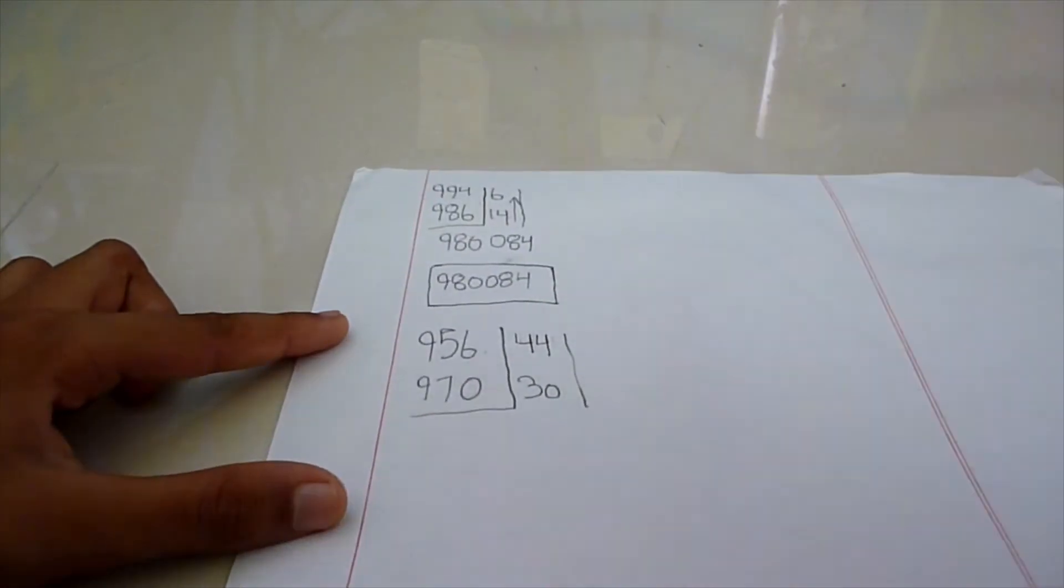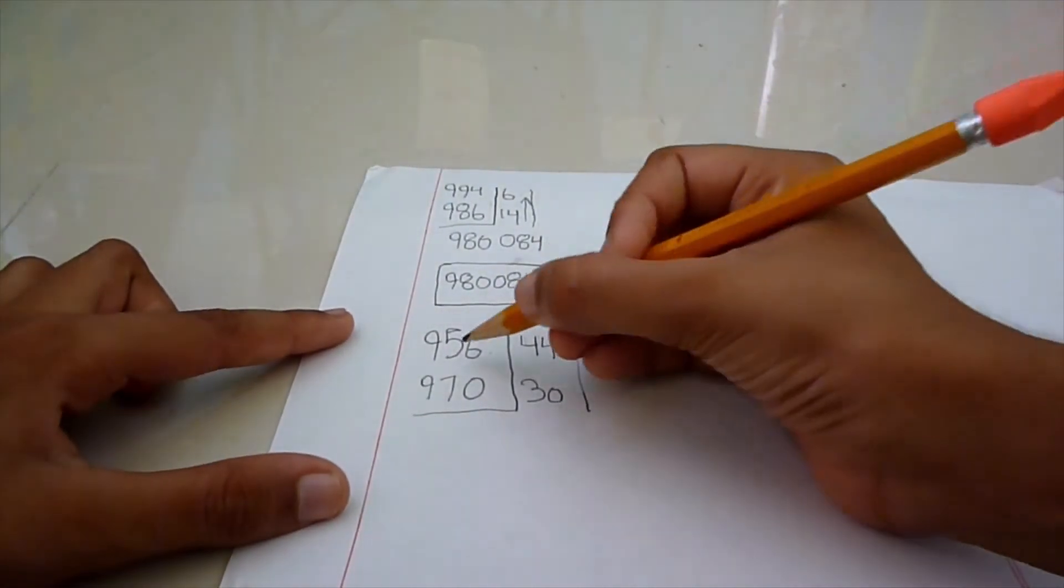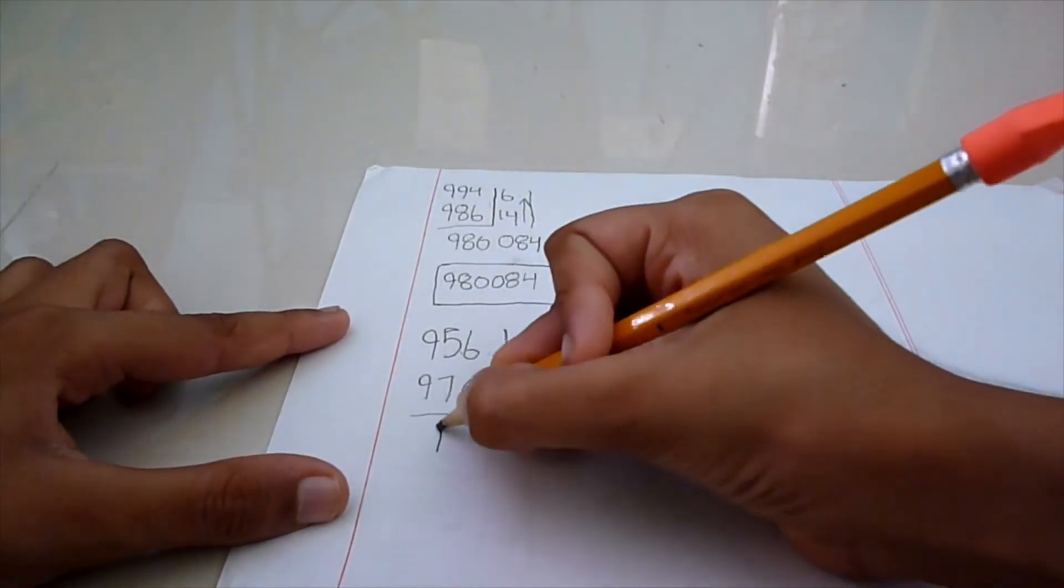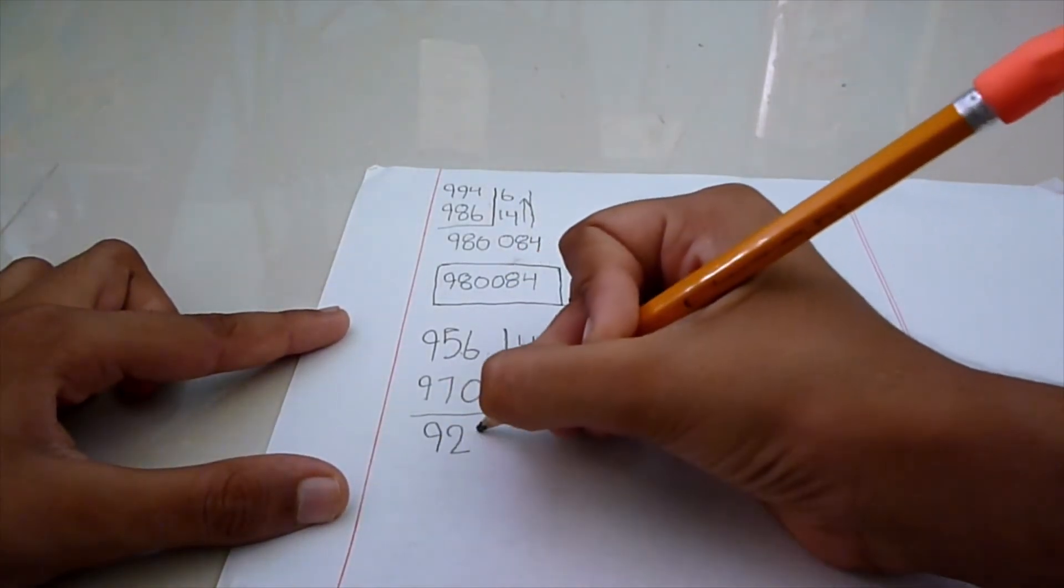Now, we have to subtract 956 from 30 and we will be getting 926 for your left-hand side.